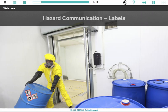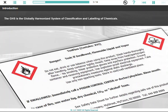Welcome to our training about labels for hazard communication. The GHS is the globally harmonized system of classification and labeling of chemicals.